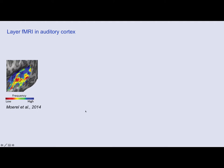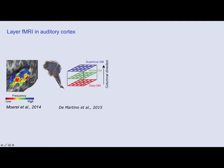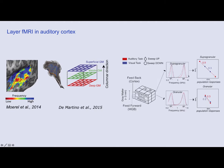People are also doing layer-dependent fMRI in the auditory cortex, where there is a tonotopical distribution: high pitch tones are represented in one region, lower pitch tones in another. Federico de Martino investigated tuning widths of auditory frequencies across cortical depths, and found that tuning width is sharper in upper layers when participants attend the task better, compared to deeper layers which seem independently unresponsive to attention.